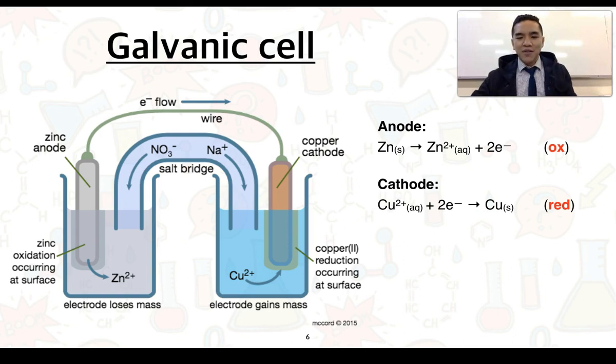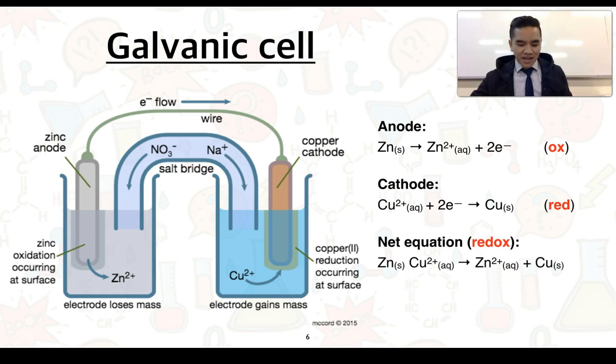We can combine these two half equations to write a net equation, which represents what's occurring in redox, and we would essentially end up with this here. This is what we call a metal displacement reaction, where one metal which is more active is displacing another metal from a solution of its ions, and it's doing that by giving it electrons, effectively reducing it, and allowing it to form into a solid metal.